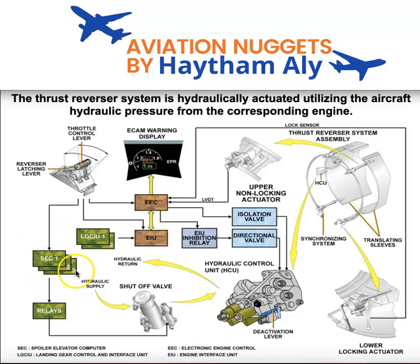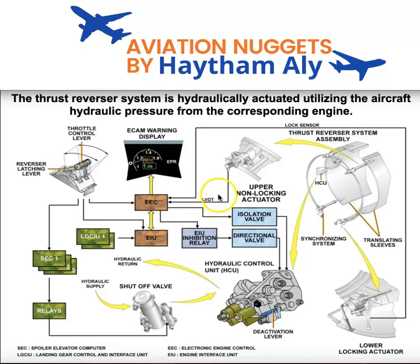Three computers — EEC, EIU, and SEC — manage three in-flight safety features: auto idle, auto restore, and auto thrust disconnection. Remember that the LVDT initiates these safety features. As maintenance personnel, if you need to deactivate a thrust reverser for flight dispatch, you must check the status of the LVDT. An inoperative thrust reverser must have an operative LVDT — otherwise the aircraft cannot be dispatched.